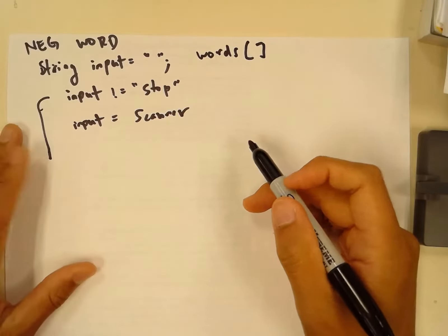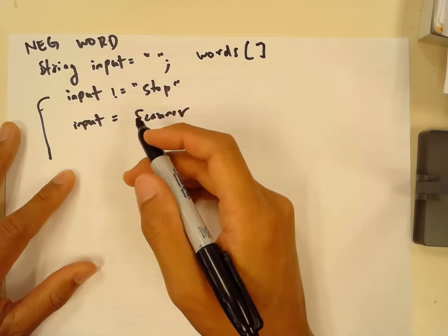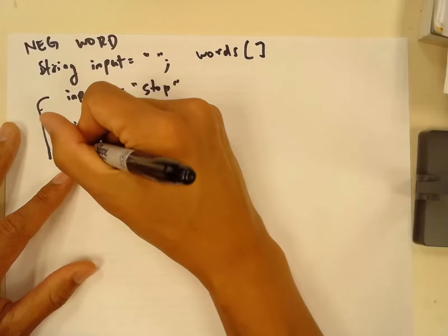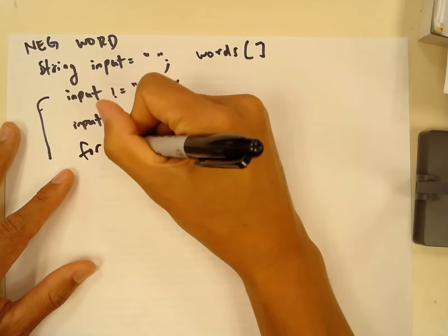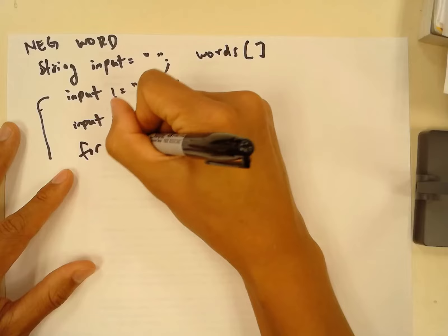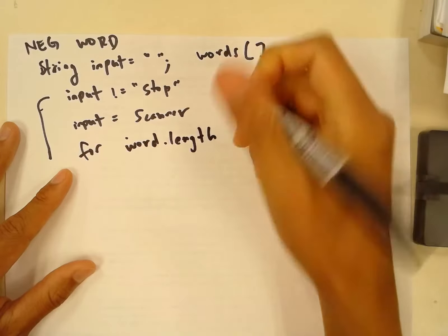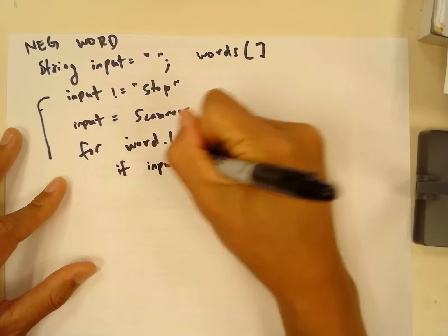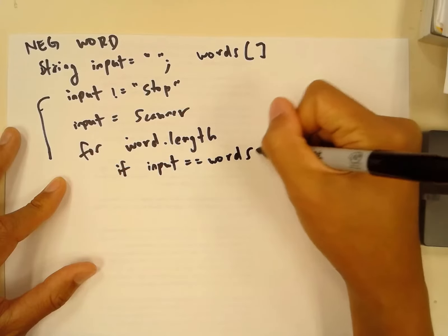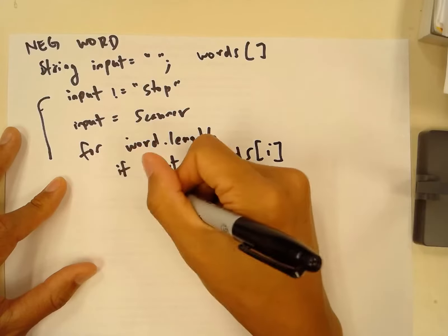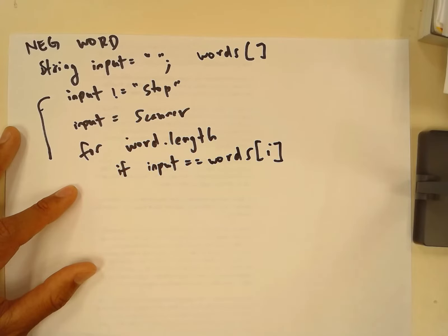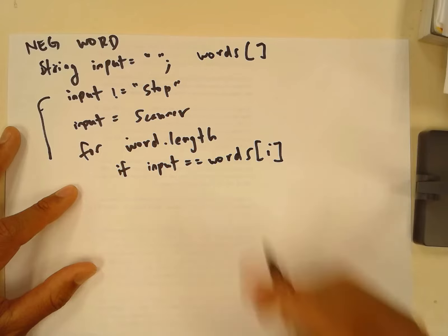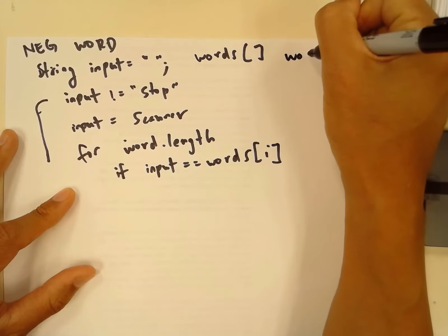The way I was thinking about it is that you would have a for loop in here that runs words.length number of times, and then for each iteration you would have a check: if input equals words[i], and if that's true, then you have a word count array that is going to be incremented.